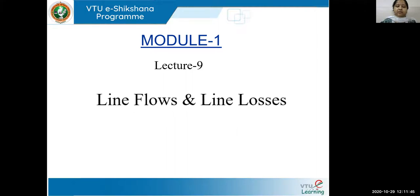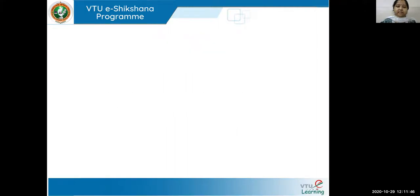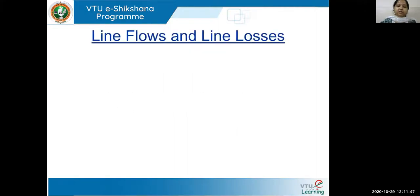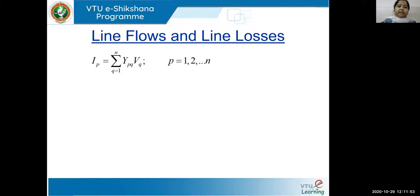Let us start with today's lecture. To calculate the line flows and line losses, first I should know what is the current equation. The current equation is: IP equals sigma Q equals 1 to N of YPQ times VQ, where P equals 1 to N number of buses.